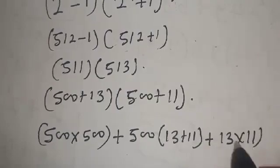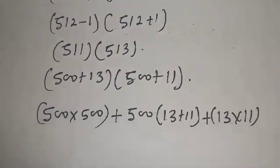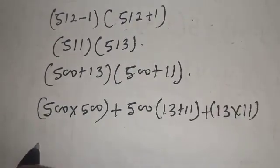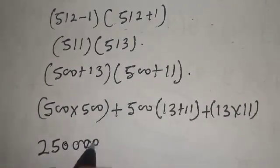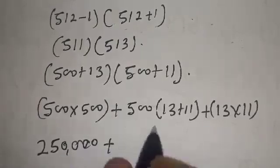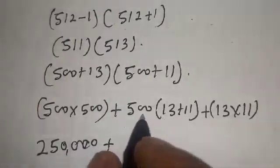Now, 500 times 500 is 250,000, plus if you open this bracket